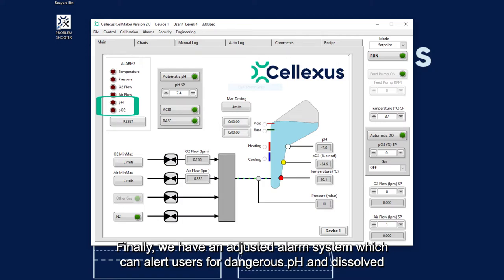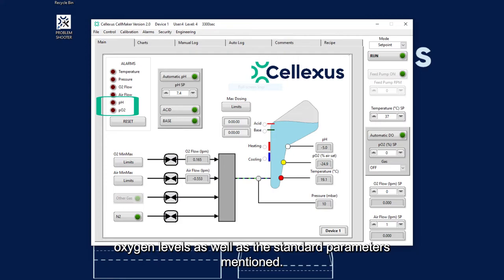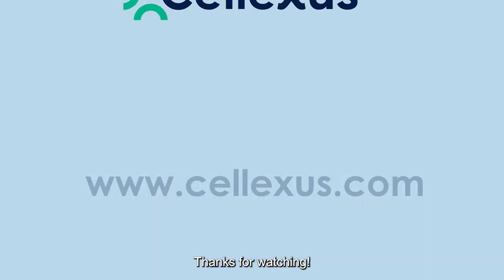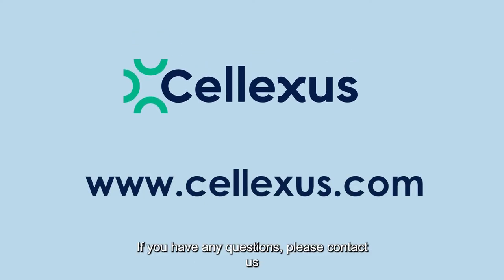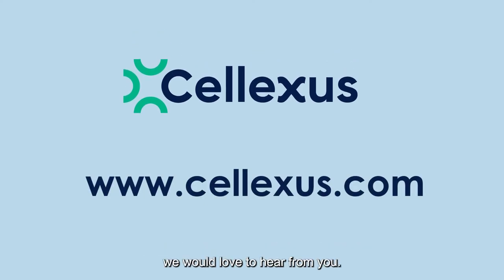And finally, we have the adjusted alarm system, which can alert users for dangerous pH and dissolved oxygen levels, as well as the standard parameters mentioned. Thanks for watching. If you have any questions, please contact us. We would love to hear from you. Our website is www.cellexus.com